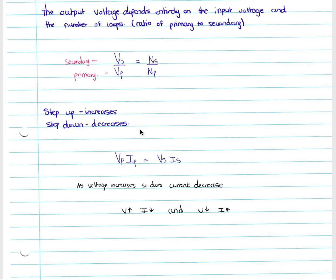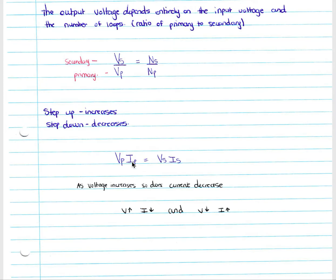Looking at the formula Vp × Ip = Vs × Is — which you will find on your formula sheet — as your voltage increases, your current decreases. If we increase our voltage, in order to keep this constant our current will decrease, and if we decrease our voltage our current increases. It is an inverse relationship: where voltage increases, current decreases, and where current increases, voltage decreases.